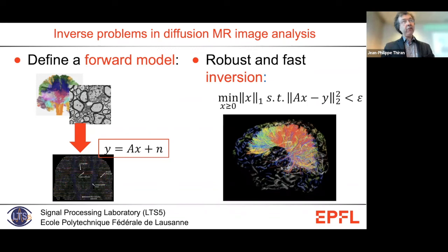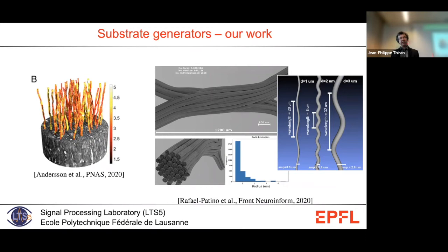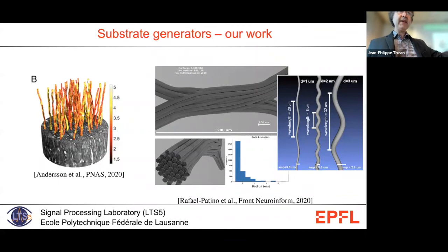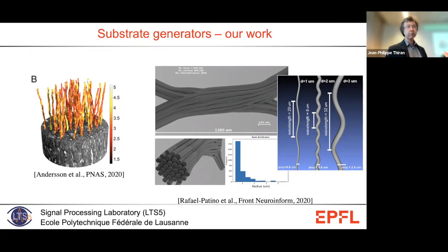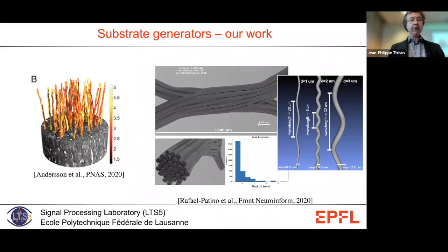To build more realistic forward models, we have developed two powerful tools. The first is a way to generate realistic substrates — not only simple parallel cylinders, but something much more realistic. We do this by collaborating with colleagues, taking samples of real brains, and automatically segmenting the axons seen in those physical samples using cryo-electron microscopy. We measure their statistics and location, and use that to generate variations around the synthetic substrate that explore the variety of things that might happen in the brain. From real axons, we generate very realistic synthetic axons.